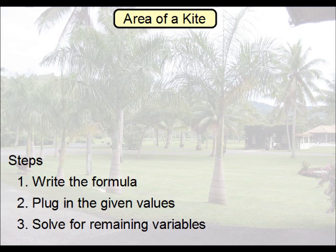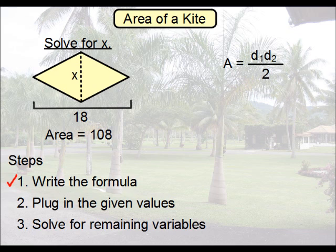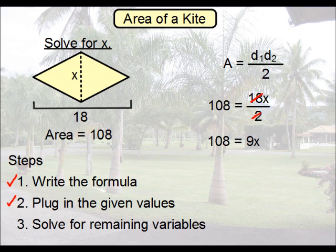Okay how about we do another example. This time we'll be given the area. Now determine the value of x. Just as before we'll start off with our formula first. Now let's plug in our information. The area is given this time. It's 108. So we're going to plug that in for A. One of the diagonals is 18. So it doesn't matter which one here. We'll just choose the first one. And then the second diagonal is x. That goes here. Now let's go ahead and solve this. We can do this by just reducing 18 and 2 to make 9. And then divide by 9 to get our answer.